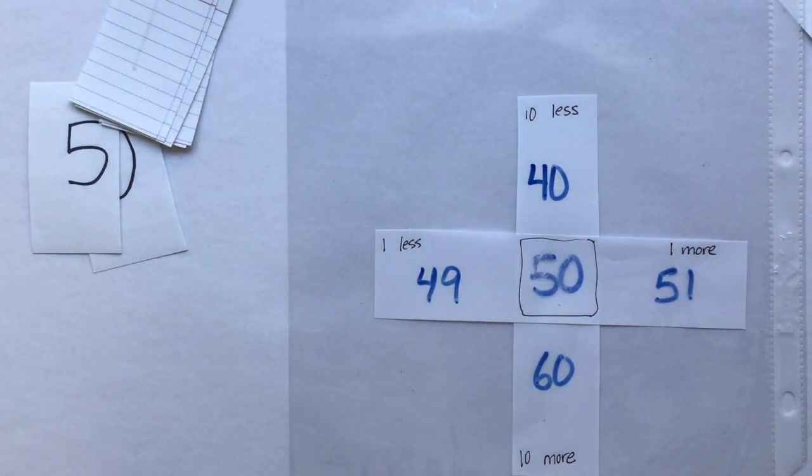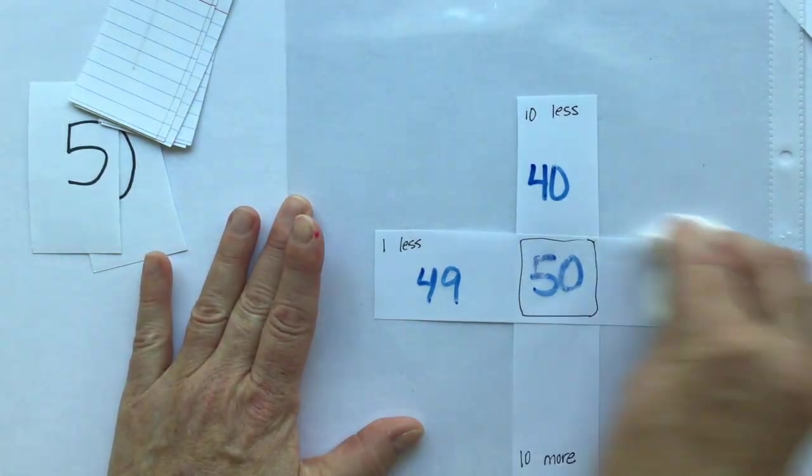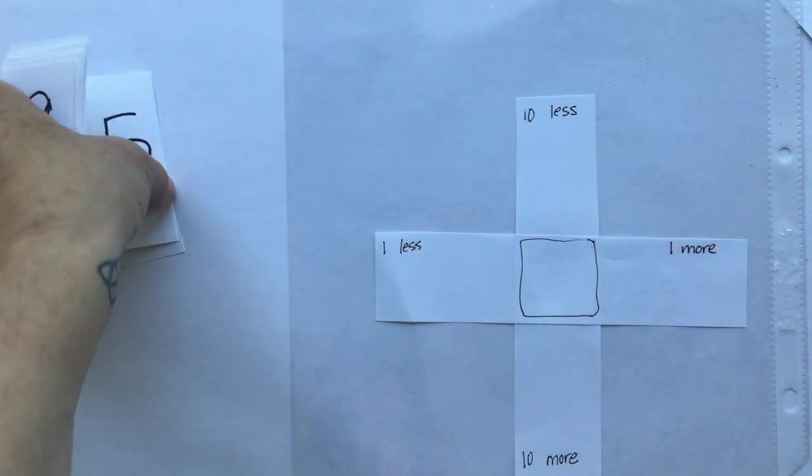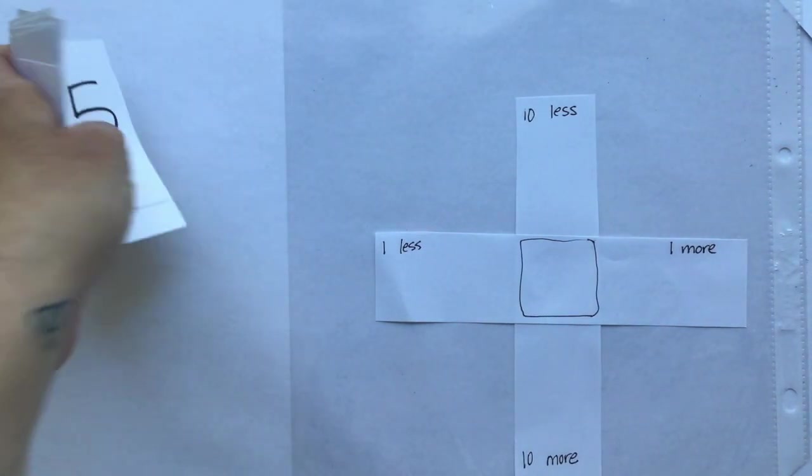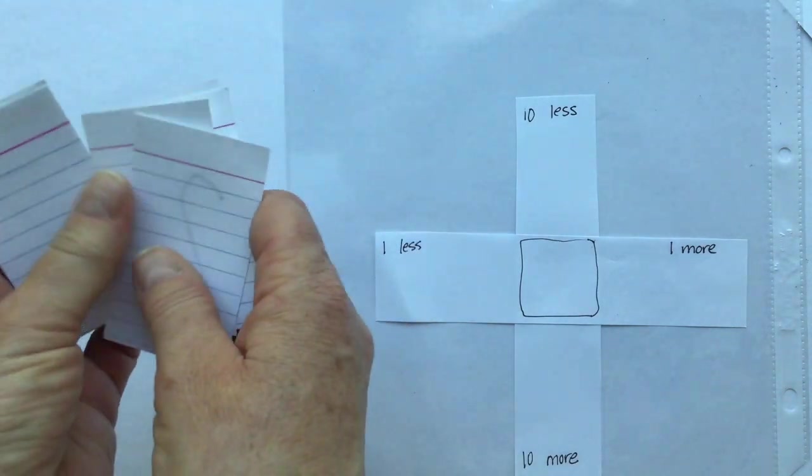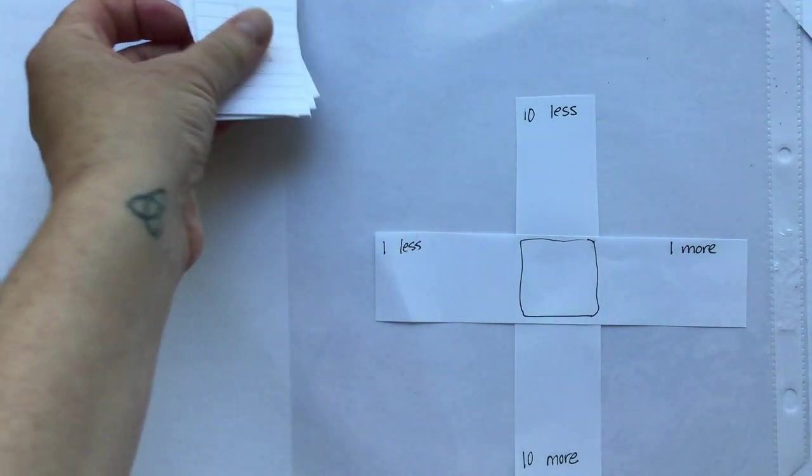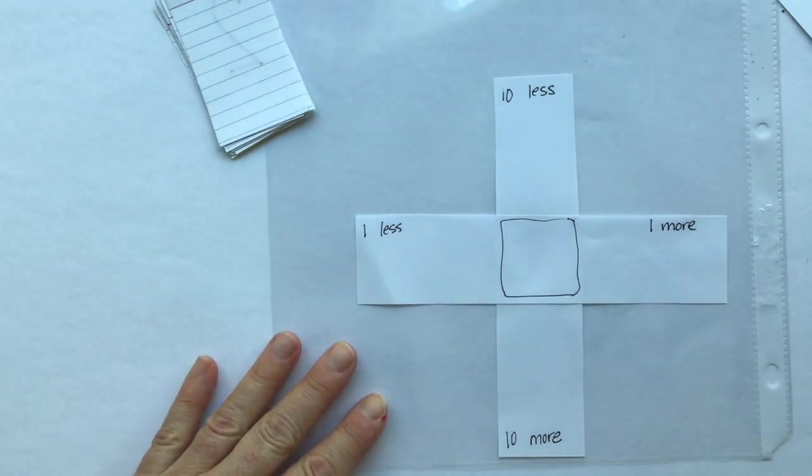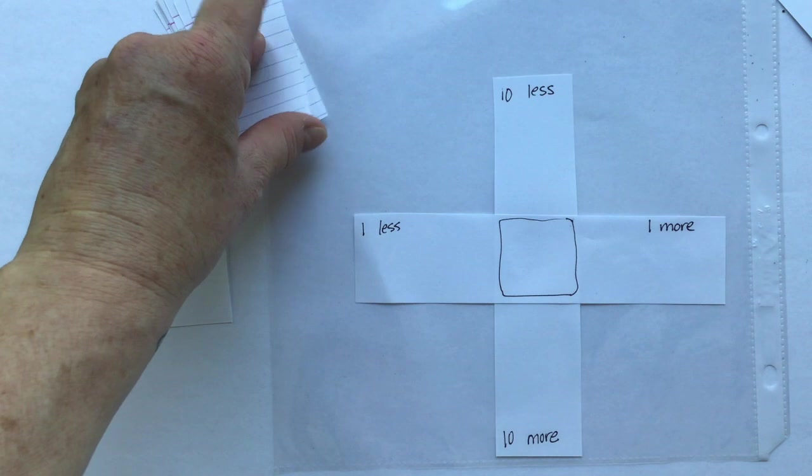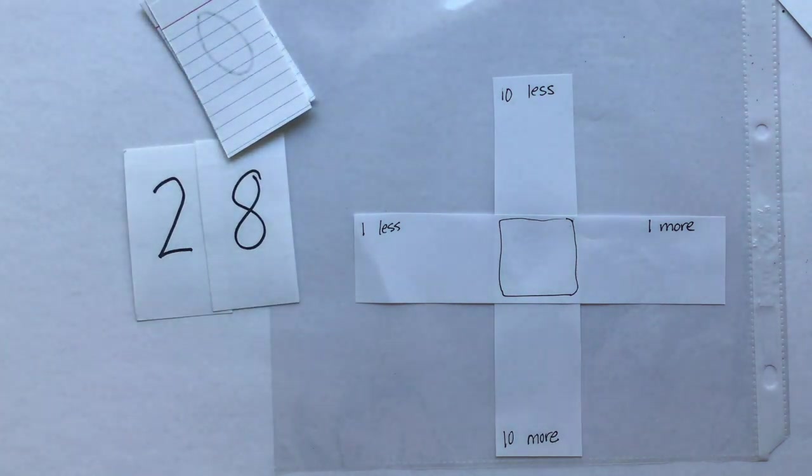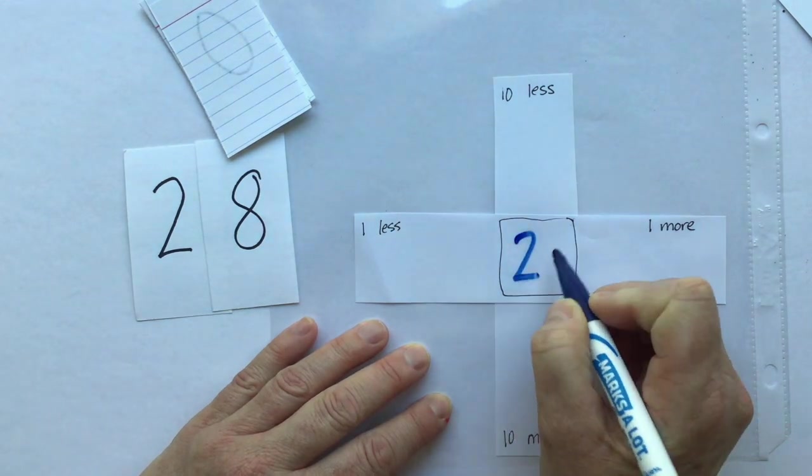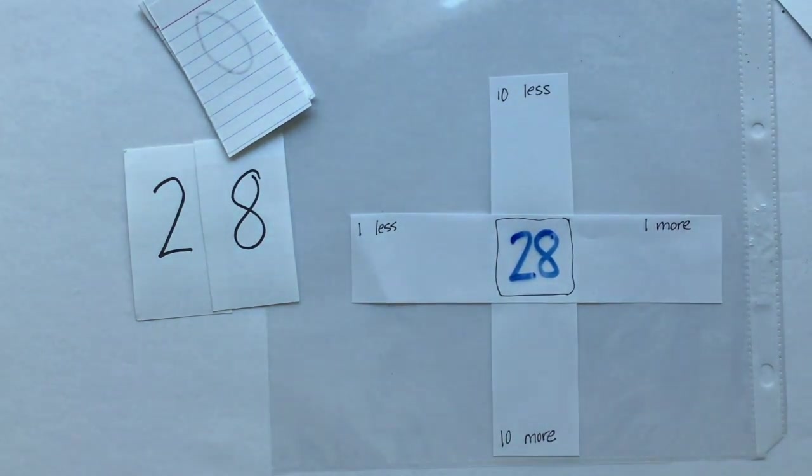All right. We'll do one more together. And then you can keep playing this game back and forth with your partner as many times as you want. So shuffle, shuffle, and let's turn over two numbers for our two-digit number. Twenty-eight. So on your game board, put the number 28 in the middle.